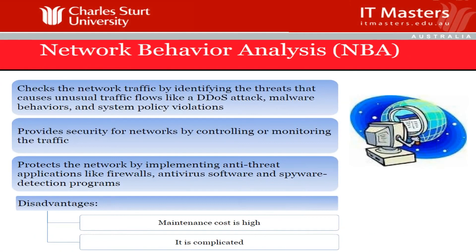What is NBA — Network Behavior Analysis? The sensors look into the network and try to see if there is unusual traffic flow, such as DDoS or malware behavior. Based on the policies and setup, it will try to control and keep your network safe. A couple of disadvantages: network behavior analysis hardware and software can be expensive, and it is complicated.